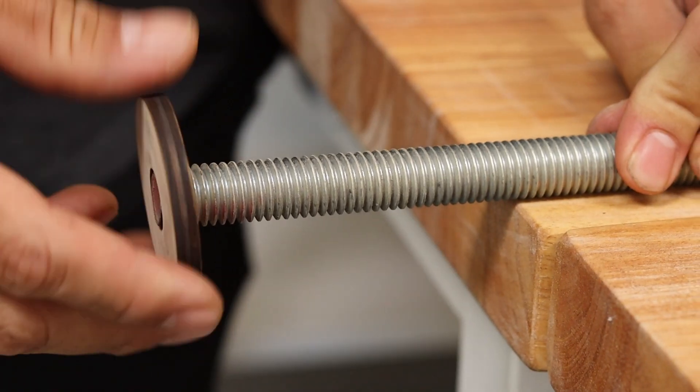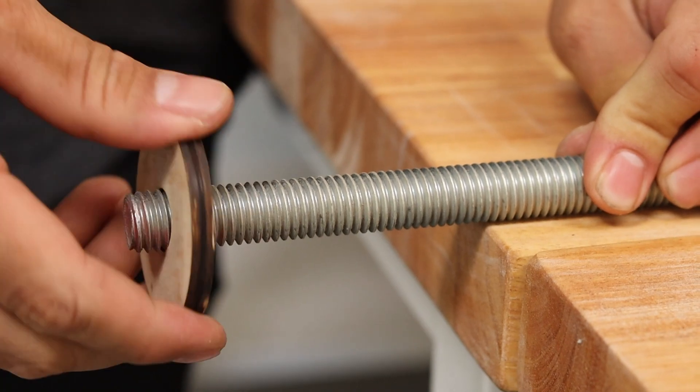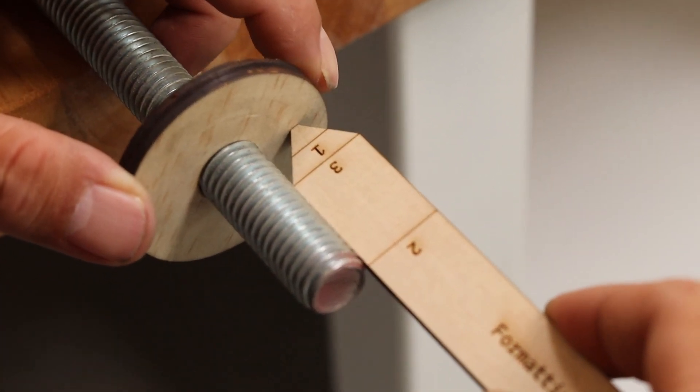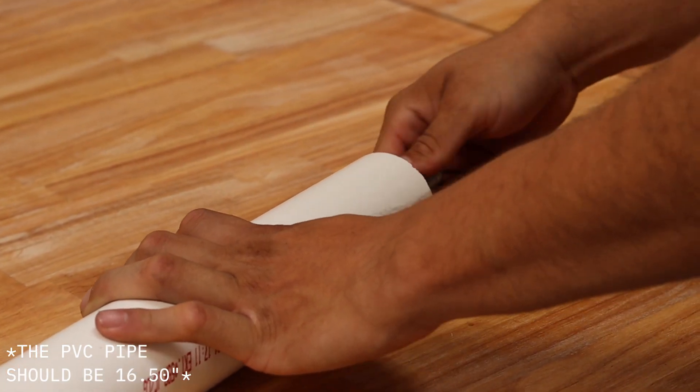Insert one number two wooden donut into the threaded bar so that the outside of the number two line of the formatting tool aligns up to the edge of the threaded bar. Insert the threaded bar and wooden donut into the PVC pipe.